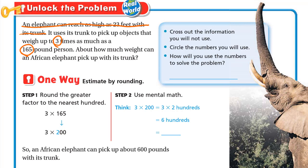How will you use the numbers to solve the problem? The question says 'about how much weight,' so 'about' means we will estimate. It says 'three times as much as 165 pounds,' and 'times as much as' means we will multiply. So we'll multiply 3 by 165, and we don't need the exact product — we just need an estimate.